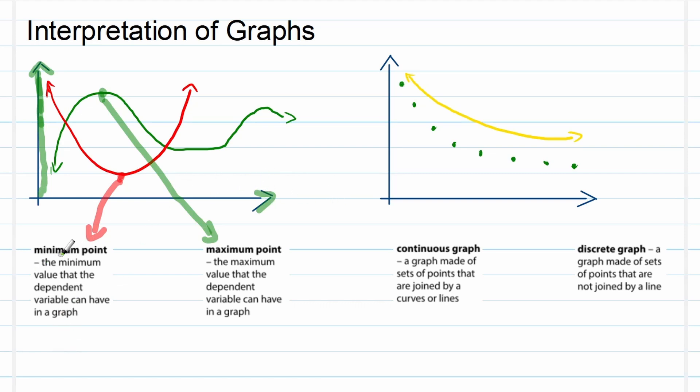So this is the difference between a minimum and a maximum point. Thirdly, let's look at what a continuous graph is and what a discrete graph is. Continuous, exactly what it says: a continuous graph is a graph that continues, like the yellow one. You can see it just continues, it doesn't stop. There's no break in the graph. So it's a graph made of a set of points that are joined by a curved line. So the moment you see a line like this, then you know it's continuous.